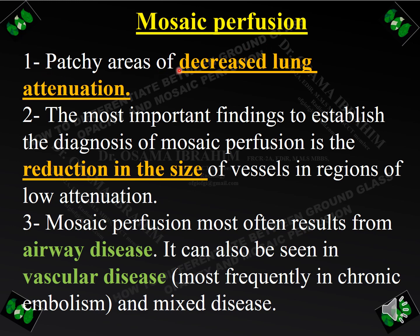Mosaic perfusion is a patchy area of decreased lung attenuation, meaning a black area. The most important finding to establish the diagnosis of mosaic perfusion is the reduction in size of vessels in the regions of low attenuation, as we will see in the next slides in practice. Mosaic perfusion most often results from airway disease; however, it can also be seen in vascular disease such as chronic embolism.